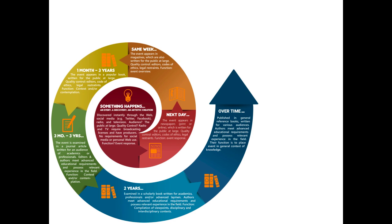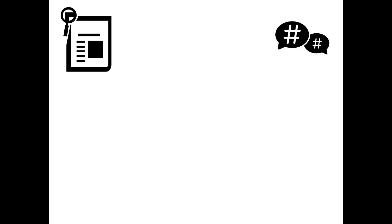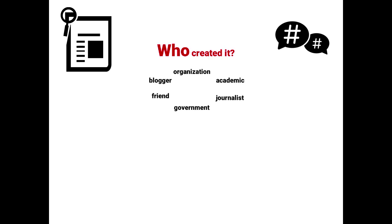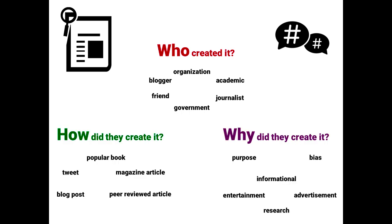Now that you understand the ways in which information is created, you can become a part of the creation process by looking at the sources, evaluating them for authority, and using them for your research. Whether it's looking at the most authoritative sources to help you write a research paper, or scanning social media to learn about breaking news, understanding who created it, how the information was created, and why it was created will help you to form your own opinion and enter into the research conversation.